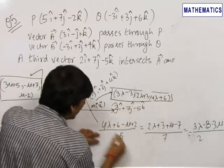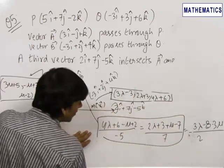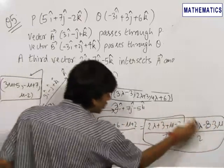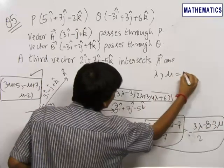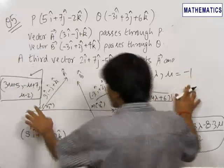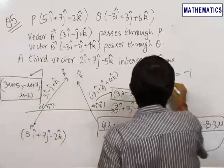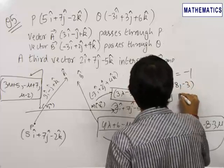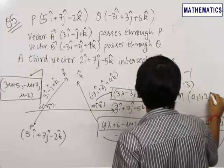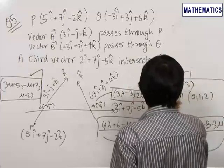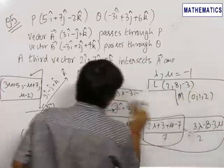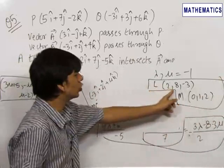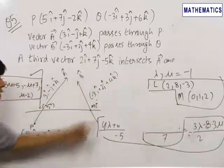From these ratios we get two equations in λ and μ. On solving them, we get λ = μ = −1. Substituting back into the position vectors, we get the position vector of point L as (2, 8, −3) and the position vector of point M as (0, 1, 2). Therefore, the final answer is: L = (2, 8, −3) and M = (0, 1, 2).